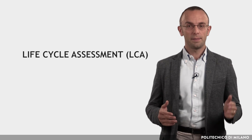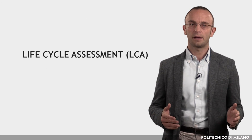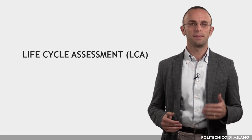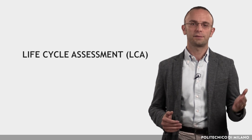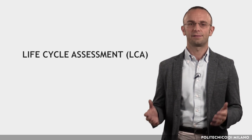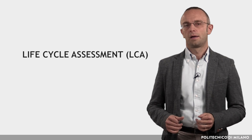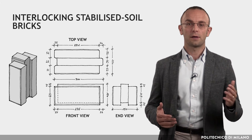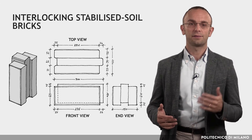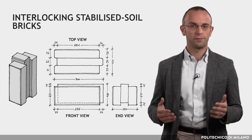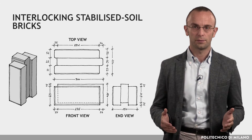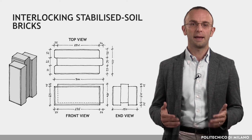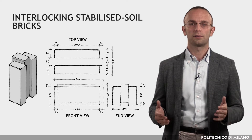The degree of sustainability of a material or component can be evaluated by means of the life cycle assessment, called LCA. For example, building with interlocking stabilized soil brick reduces the use of industrial products, like cement, and depends on local resources.